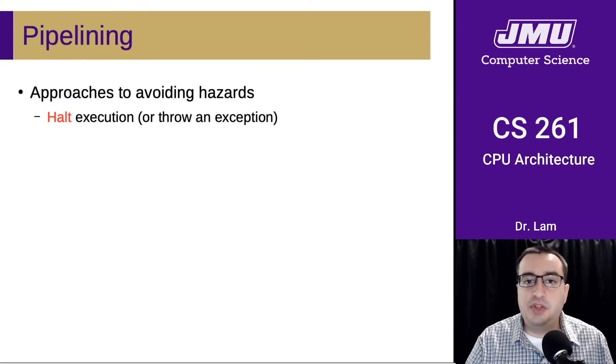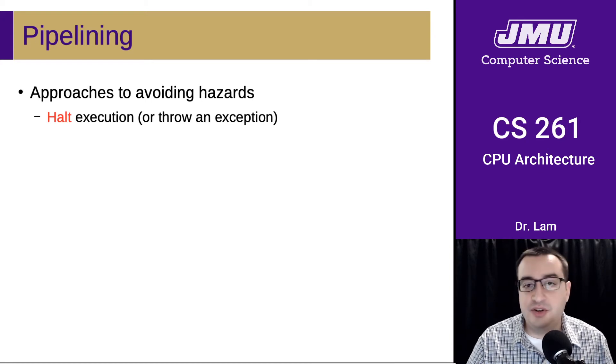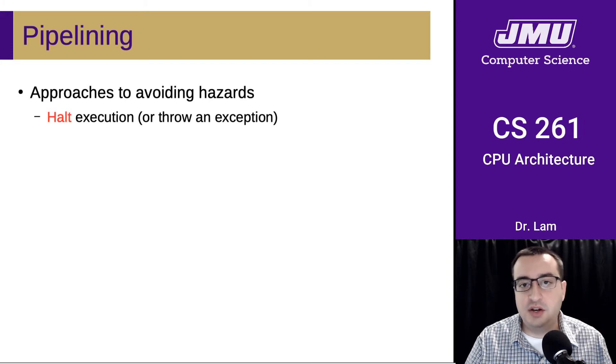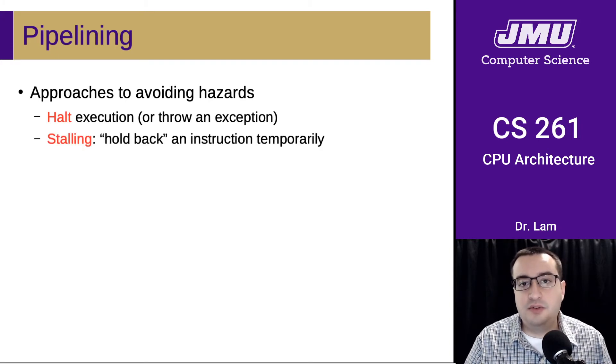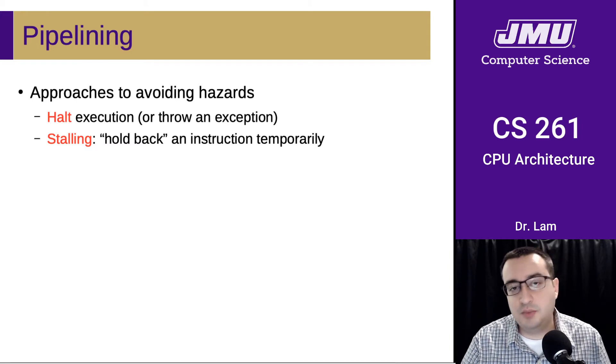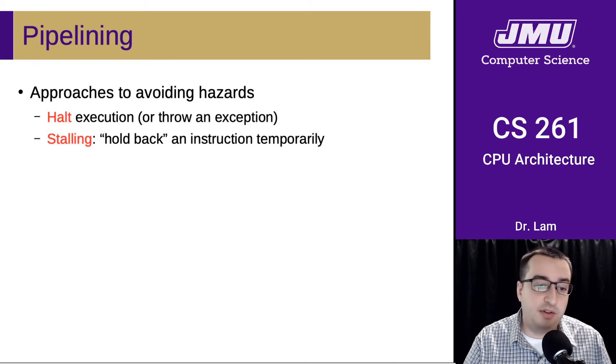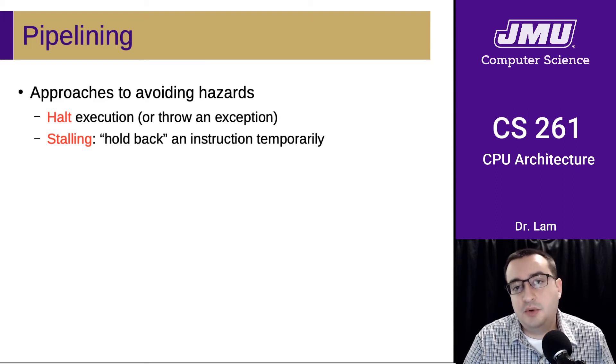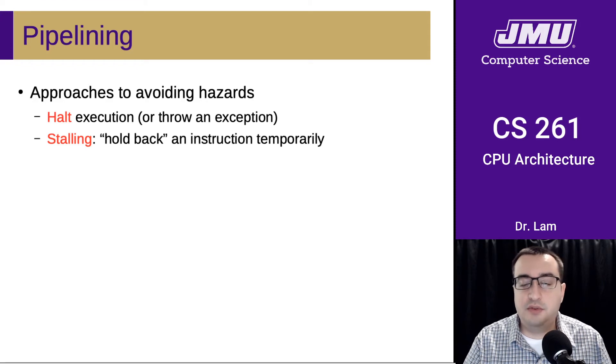So how do we get around these things? There are various approaches to avoiding hazards. Obviously, you could just halt execution when you encounter a hazard or you could throw an exception - obviously, this is not a good way of handling these things. The other sort of naive way of handling these things is to just pause and stall until the data that we need is calculated or we have determined whether or not we're taking a jump, for instance. So you're basically holding back an instruction temporarily. This has the advantage of resolving the hazards, but of course, it increases the amount of time that it takes for the instructions to execute.